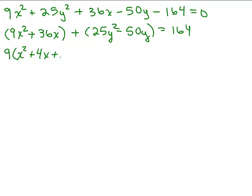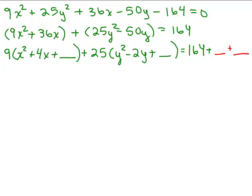and we know we're going to add something here to make what's in parentheses a perfect square and for the second set of parentheses I'm going to factor out the 25 giving y² - 2y and again, we're going to put something in here to make it a perfect square